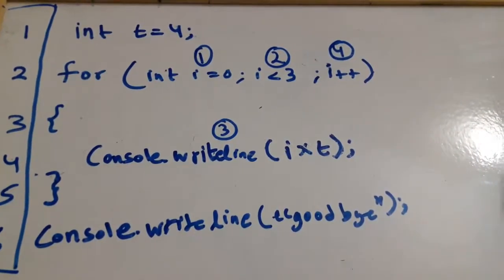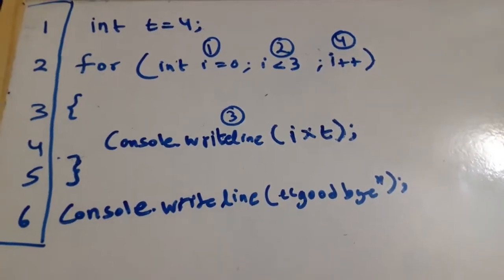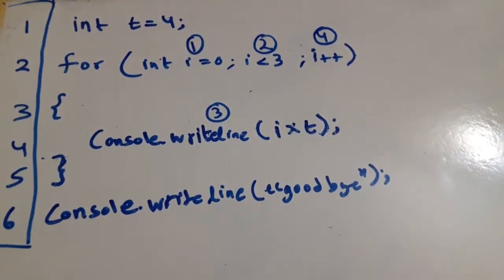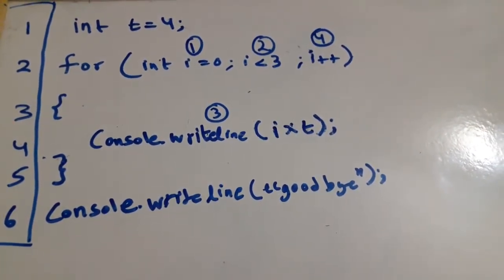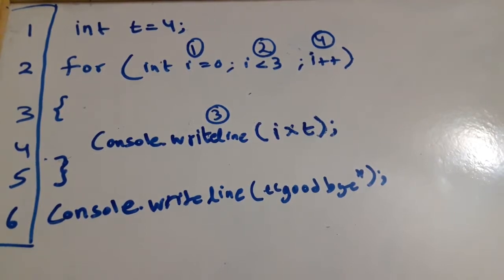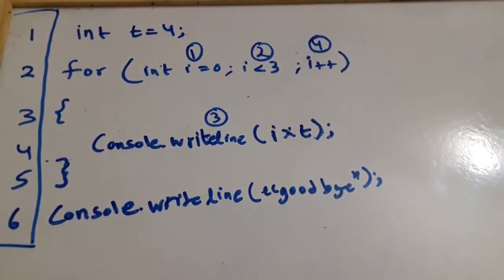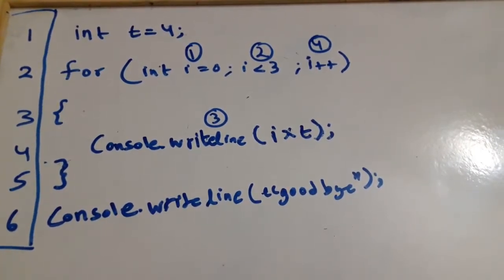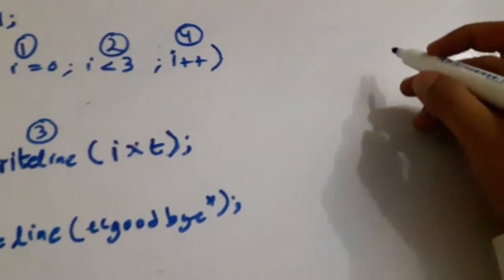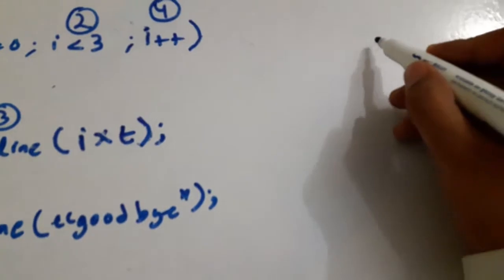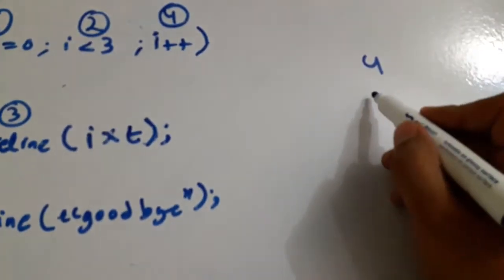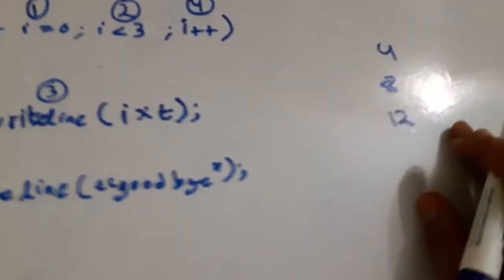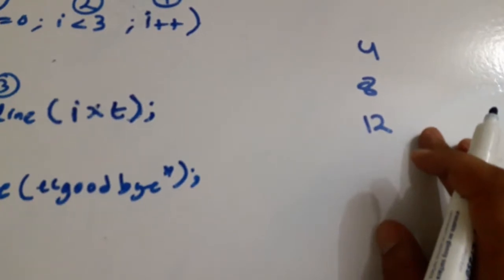Loops are used for iteration — when you want to repeat something. In this program, what we are trying to do is print the table of four up to three: four ones are four, four twos are eight, and four threes are twelve. So the expected output of our program is four, eight, and twelve. This is what we are trying to accomplish.